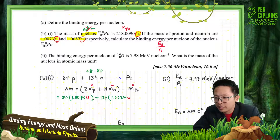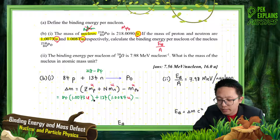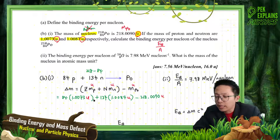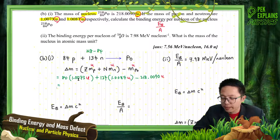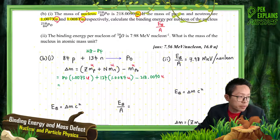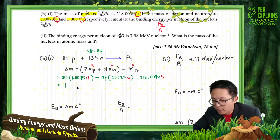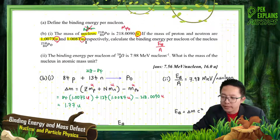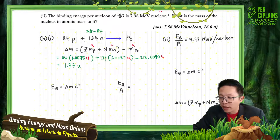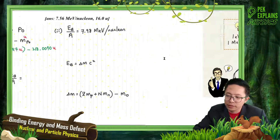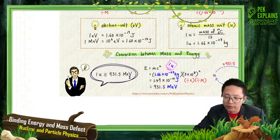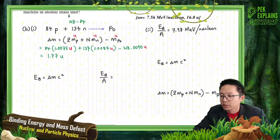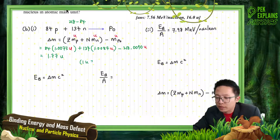Minus the mass of Polonium, which is 218.0090 u. The mass defect comes out to 1.77 u. Since the answer is already in u, we can directly find the energy in MeV using the conversion: 1 u = 931.5 MeV.